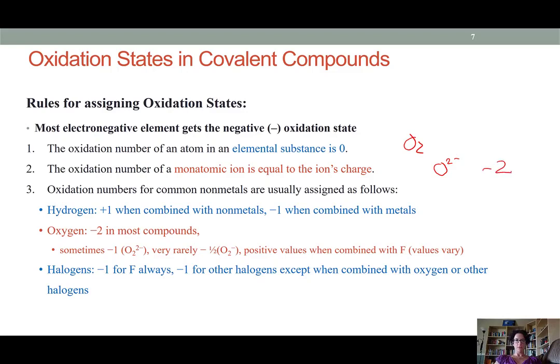Oxidation numbers for common nonmetals follow these general rules. Hydrogen can be combined with either metals or nonmetals. When it's combined with nonmetals, hydrogen has a positive 1 oxidation number. However, if it combines with metals, hydrogen becomes an anion and it is assigned an oxidation number of negative 1.